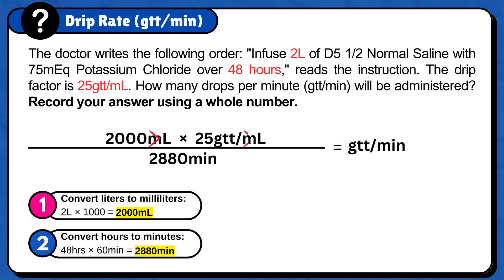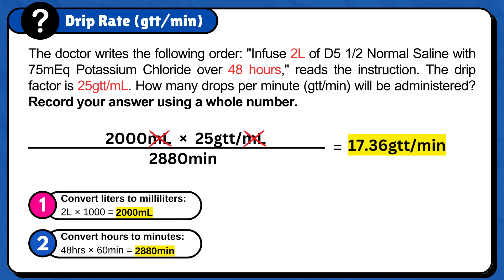Milliliter cancels out and the answer is 17.36 gtt per minute. The last step is to round to a whole number, and your final answer is 17 gtt per minute. So, 17 drops per minute, or 17 gtt per minute, will be administered.